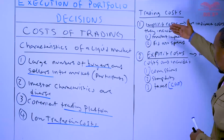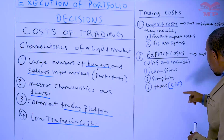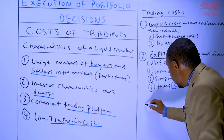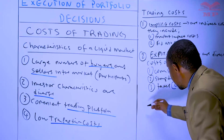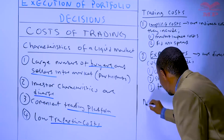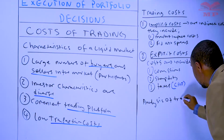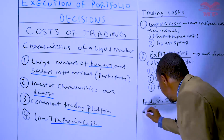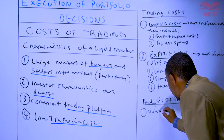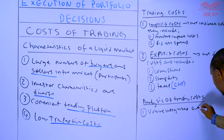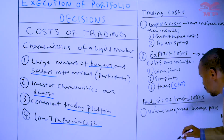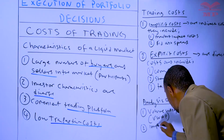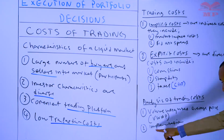Once we have looked at the difference between implicit and explicit costs, we can move on to analyze the types of costs based on two methods that can help us analyze trading costs. The first method is using the volume weighted average price, or VWAP, and number two is implementation shortfall.